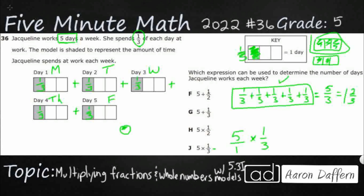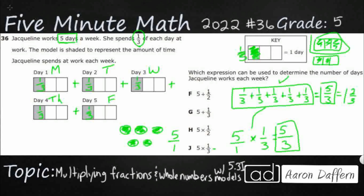So five wholes — that's one, two, three, four, five — just five circles, each broken up into one. Multiplying fractions is a cinch: you literally multiply straight across. Five times one equals five, so we get five over one times one-third. One times three makes three, giving us five-thirds. So we can represent this repeated addition with this multiplication problem, and our answer is J.